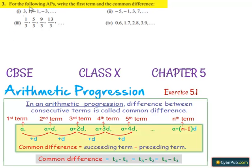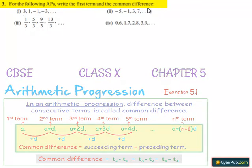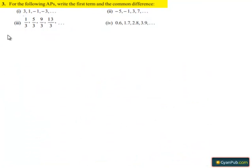Moving on to the third question: for the following arithmetic progressions, write the first term and the common difference. Now moving on to the solution. If we consider the first bit, the series given is 3, 1, minus 1, and minus 3.